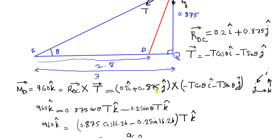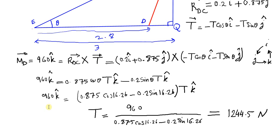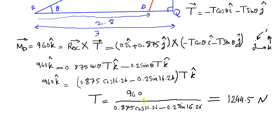We also have 0.875 times minus T cosine(theta), and j times i makes negative K. Setting 960 K equal to this equation and factoring T outside the bracket, T equals 960 divided by the denominator: 0.875 cosine(16.26°) minus 0.2 sine(16.26°). Calculating this, T equals 1244.5 Newtons.